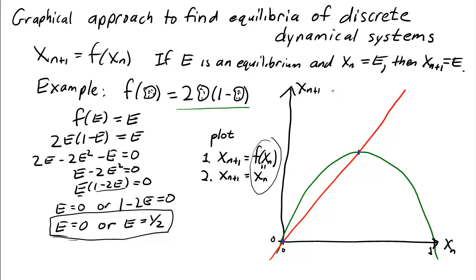The coordinates of these points are (E, E), because both x_n and x_{n+1} are E at these points. In this graph, we found the two equilibria.